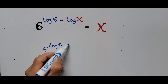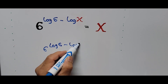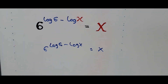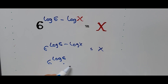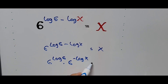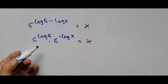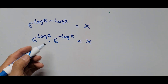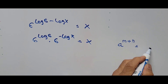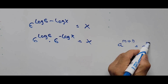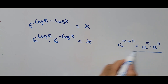From here, simplify the exponent. We now have 6 raised to log of 6, times 6 to the power of negative log of x, equal to x. Here I applied the exponent rule: a raised to m plus n is equal to a raised to m, times a raised to n. That's what happened on this step.